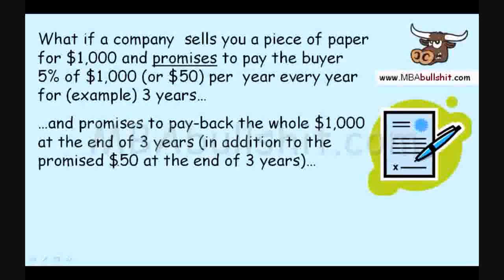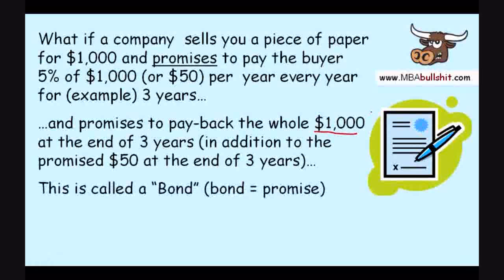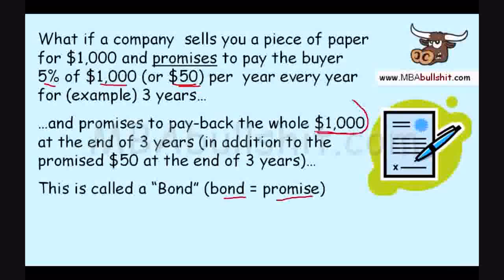Remember, every year they're giving you $50, including the third year. So in the third year, you get the promised $50 plus you get back the entire $1,000 which you paid to the company in the beginning. Now, this piece of paper is called a bond. Bond means promise — just like you make a bond with a friend or a loved one, you're making a promise. In this case, it's a promise to pay you 5% of $1,000, or $50, every year, and a promise to pay back the entire $1,000.